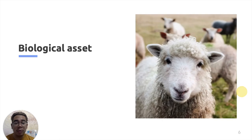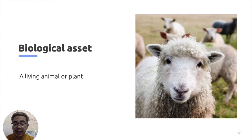We will now talk about some key definitions from PAS 41. How does PAS 41 define a biological asset? A biological asset is any living animal or plant. Examples include cows, sheep, and chickens as living animals, and trees, vines, and crops as living plants. These are all biological assets.